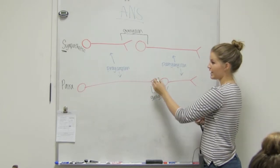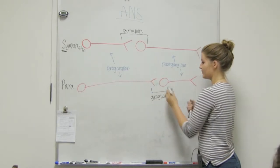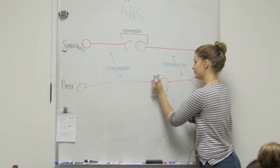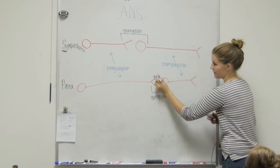So, for both preganglionics, they're both going to secrete, guess what? Acetylcholine. Acetylcholine. It's right there.